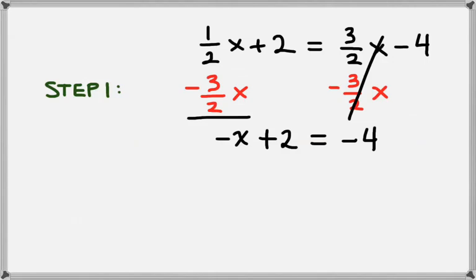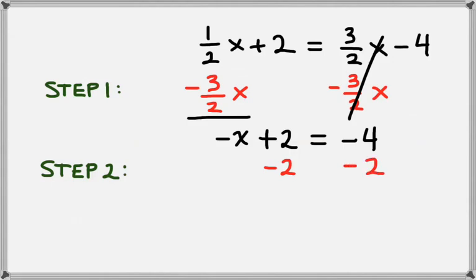We have to be careful here — we don't want to forget that negative in front of the 4. That's something that happens a lot and it's really easy to do, so we need to remember the negative. The next step is we want to get the x term by itself, so we want to subtract 2 from the left hand side, then we'll do that from the right hand side as well. On the left, the 2 and negative 2 cancel, so we're just left with negative x. And on the right, we have minus 4 minus 2, which gives us minus 6.